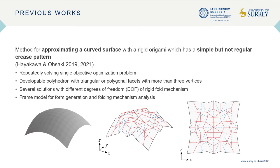We have proposed a form generation method for approximating a curved surface through the optimization problem. Several polyhedra which can be developed to a plane are obtained. They have different degrees of freedom of rigid fold mechanism. We have also developed a frame model for form generation and folding mechanism analysis, which is also used in this study.